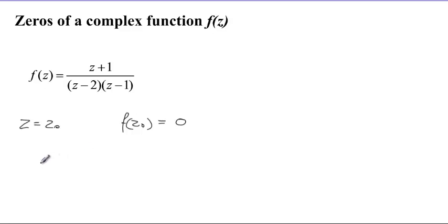In this example given here, we note that when z is equal to minus 1, evaluating this function, we get f of minus 1 equal to 0. So z equals z0 equals minus 1 is a zero of the given function f(z).